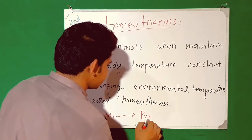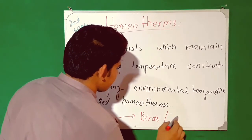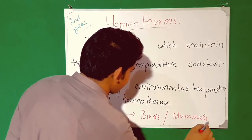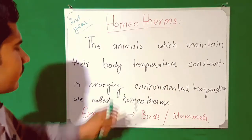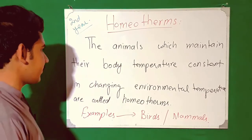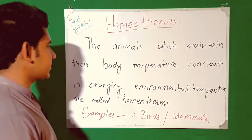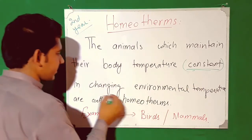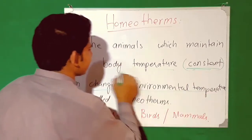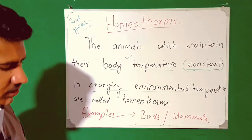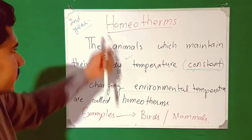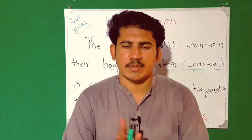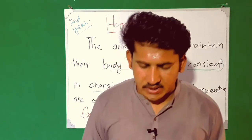The birds and mammals are homeotherms — they keep their body temperature constant despite changing environmental temperature. That is our today's topic. I hope that you will like my lectures and subscribe to the YouTube channel. Thank you so much.